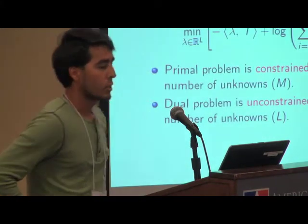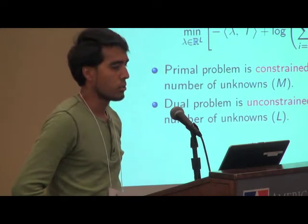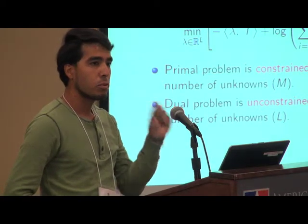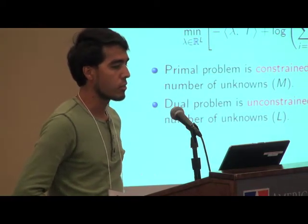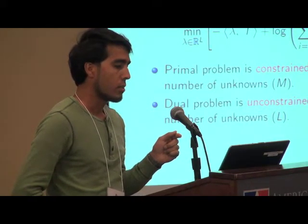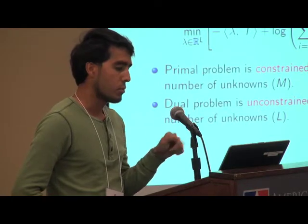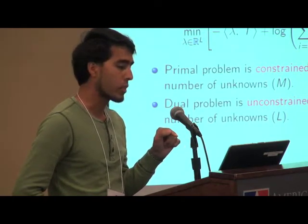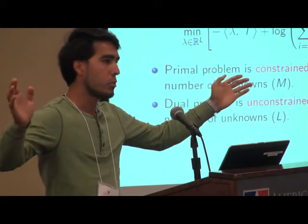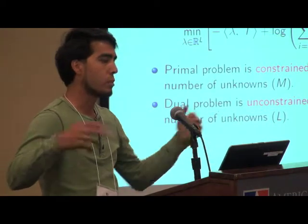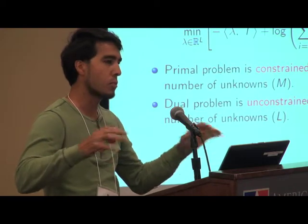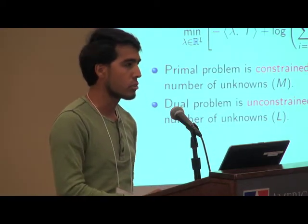And the nice thing about this framework is that, as it's well known, when you want to minimize the Kullback-Leibler information, you can consider the dual problem of that, the Lagrangian dual of that. And that problem becomes an unconstrained minimization problem where the objective function is strictly convex. So, instead of solving an optimization problem with many unknowns, with many constraints, you can reduce it to an optimization problem with few constraints, no constraints, and few variables. So, it's very computationally tractable.